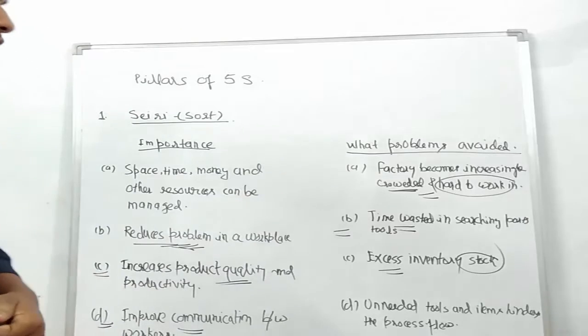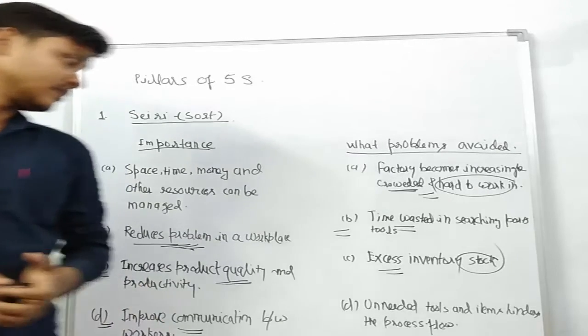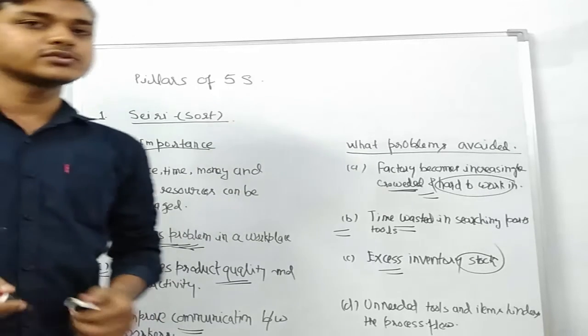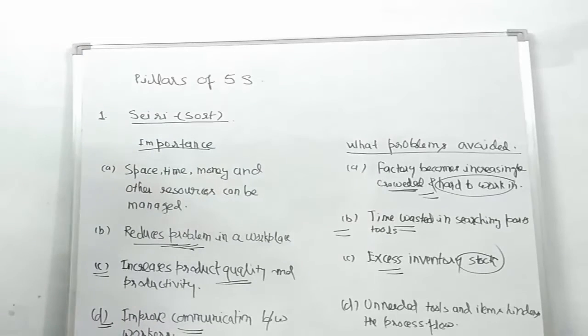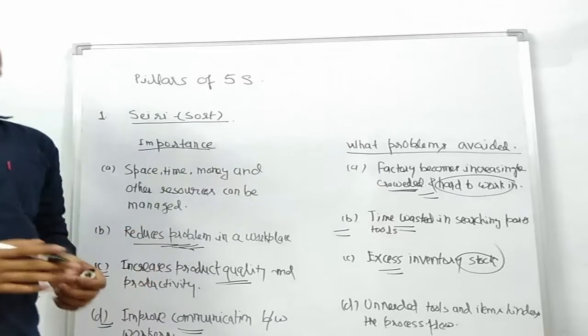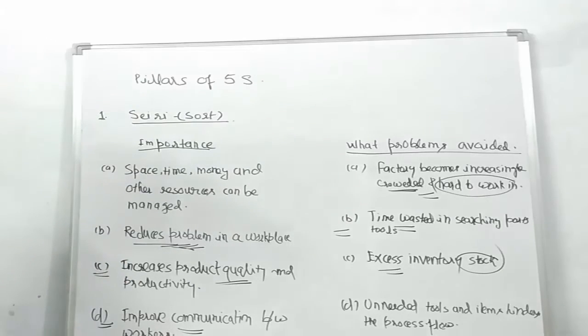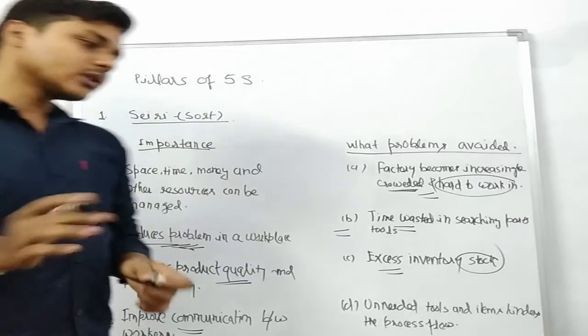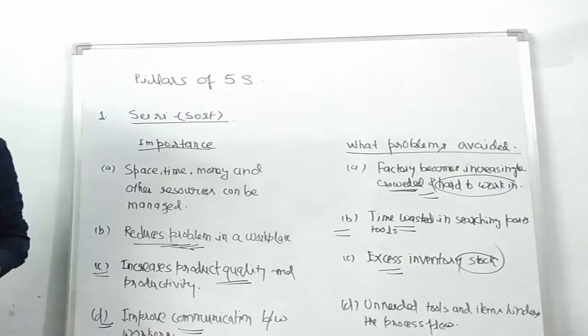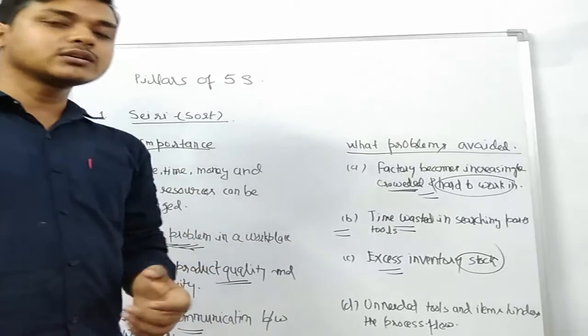The last is unneeded tools and items that hinder the process flow. Take an example: if tools are kept here and there and production is going on, unneeded tools which are not required at that time of production create a hindrance to the efficient working of a process flow.